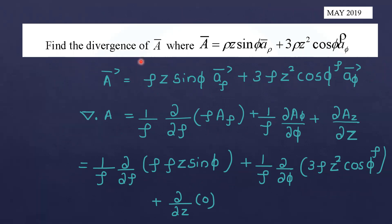Next question: find the divergence of vector A, where A equals ρz sinφ aρ-vector plus 3ρz squared cosφ to-the-power-ρ aφ-vector. The divergence in cylindrical coordinates is: 1 by ρ dou by dou ρ of ρ Aρ plus 1 by ρ dou by dou φ of Aφ plus dou Az by dou z.